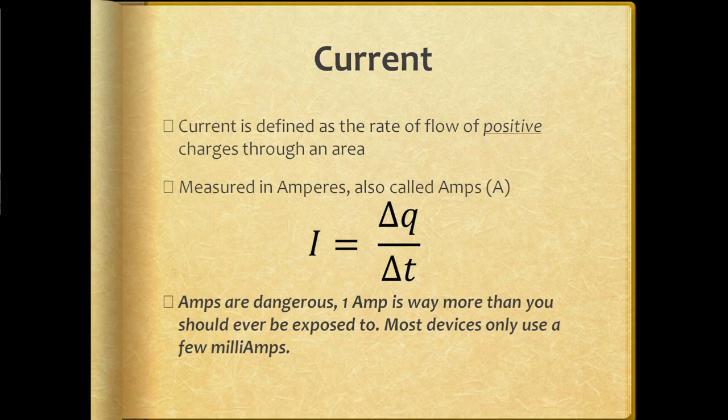Current is the dangerous part, because current is the actual moving charges. Voltage would be kind of like: there's a million rhinos over there and there's no rhinos over there. That fact alone isn't dangerous. What's dangerous is if the rhinos are charging and you're standing in the way of them. The number of rhinos stampeding per second is like the current — the more current there is, the more rhinos, the more dangerous it is.